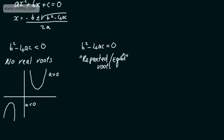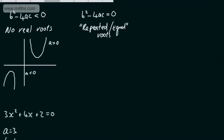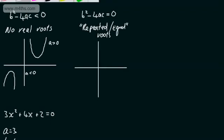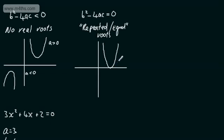Let's look at this graphically. We're going to have a parabola that touches the x-axis at exactly one point — it doesn't cross, just touches. That's a repeated root. If a is greater than 0, the parabola touches from below; if a is less than 0, it touches from above. You'll see later in your studies that this is quite important, particularly for things like tangents to circles.